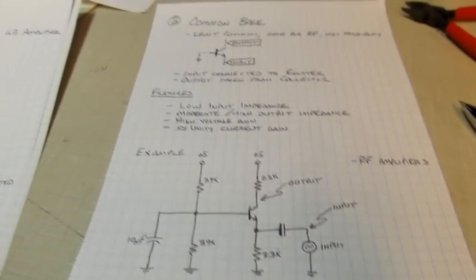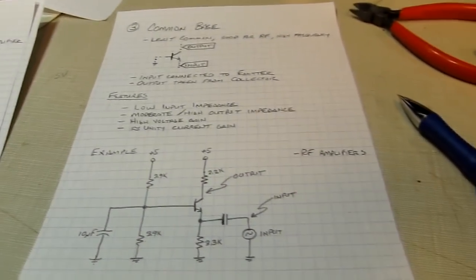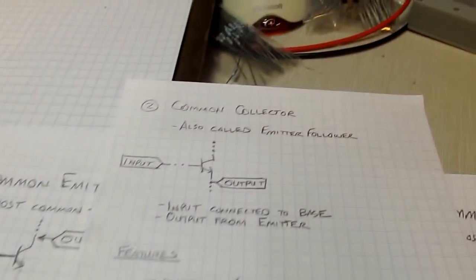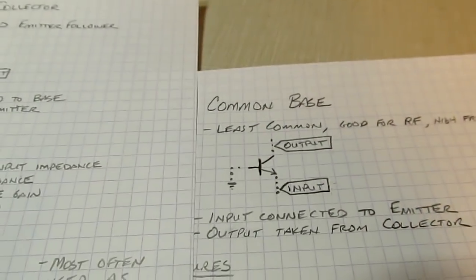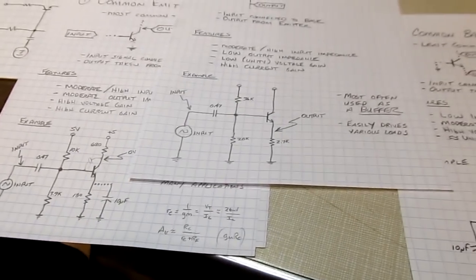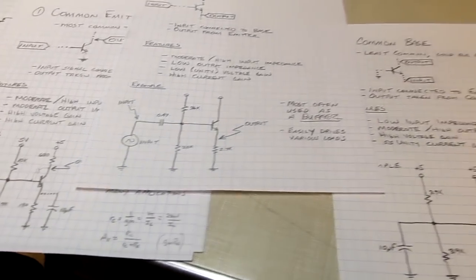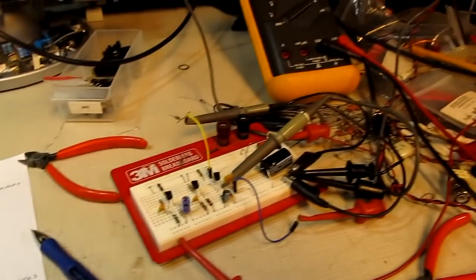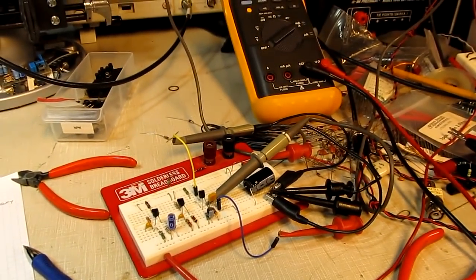I hope this tutorial gave you a better understanding of what is meant by a common emitter, a common collector, or a common base amplifier — what the configurations look like and when they're typically used. Thanks for watching and I appreciate all your comments.